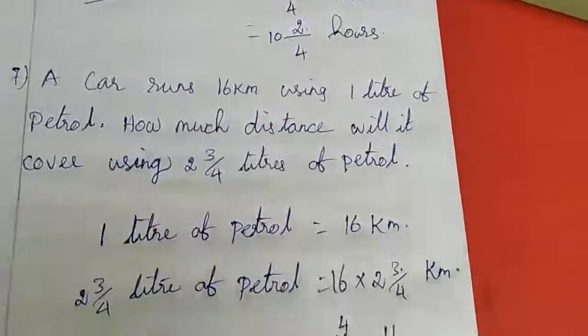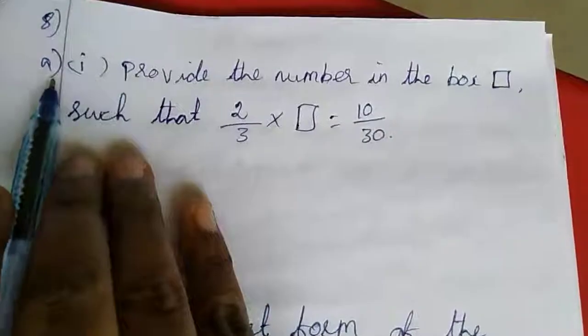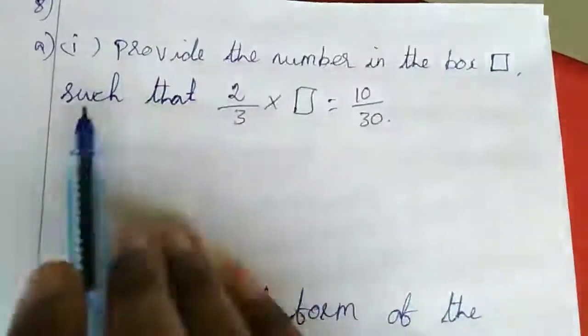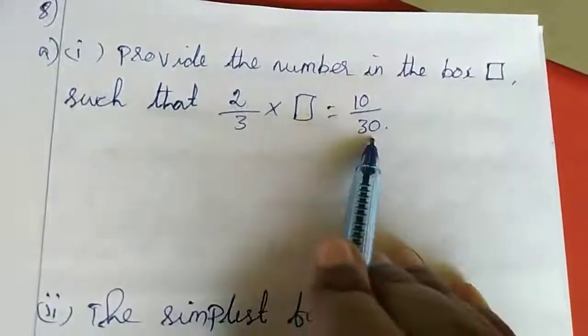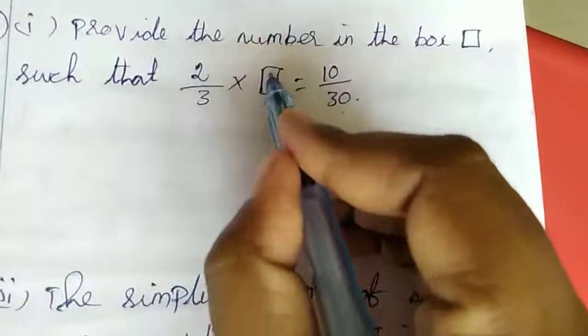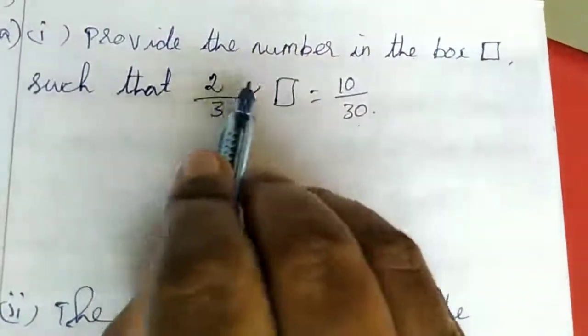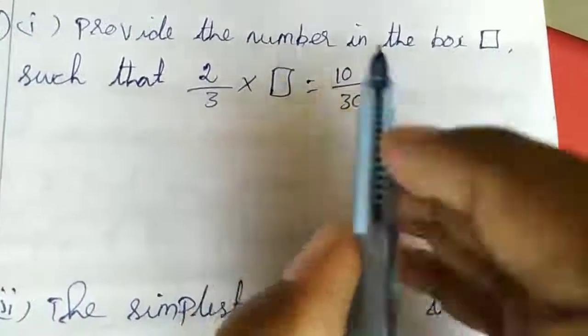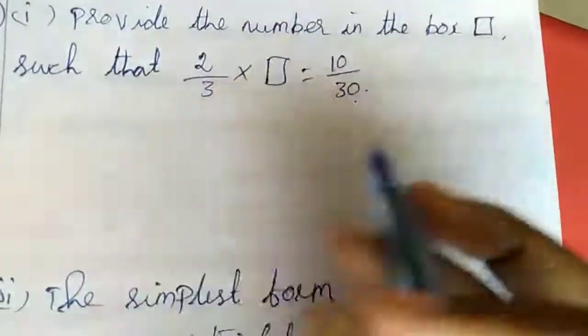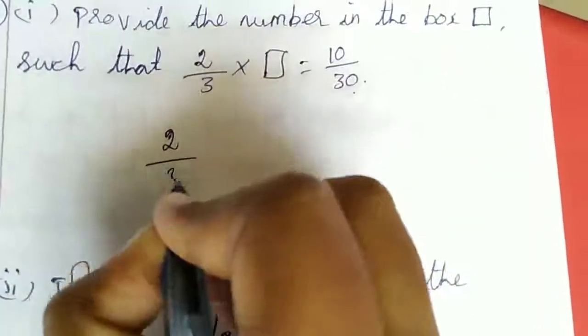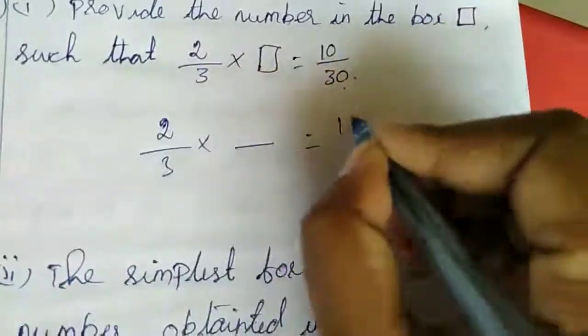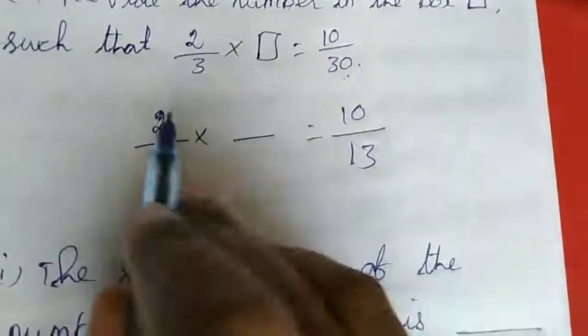Now, eighth sum. Part (a): Provide the number in the box such that 2/3 times the box equals 10/30. We need to find this fraction.